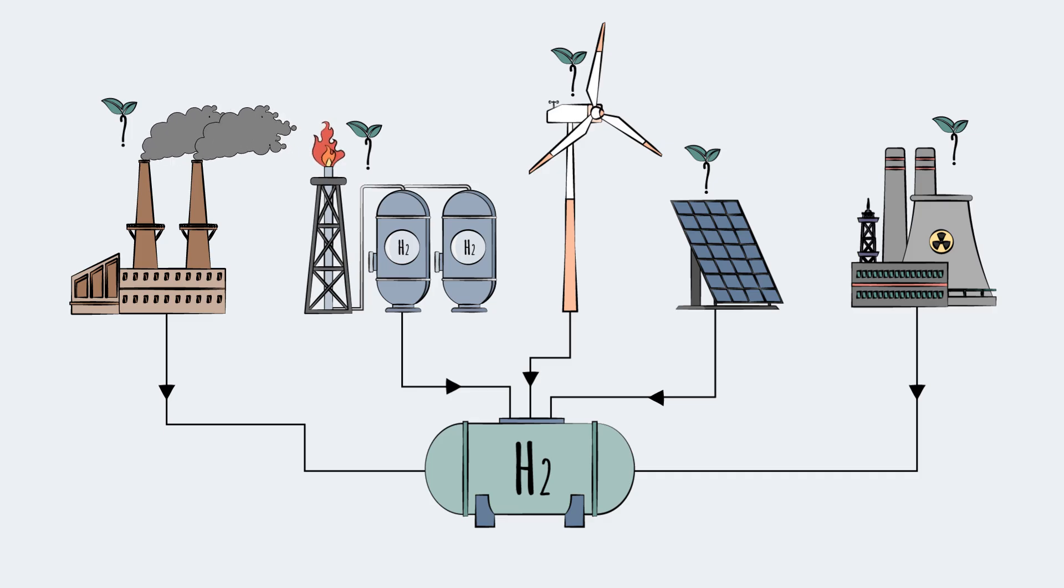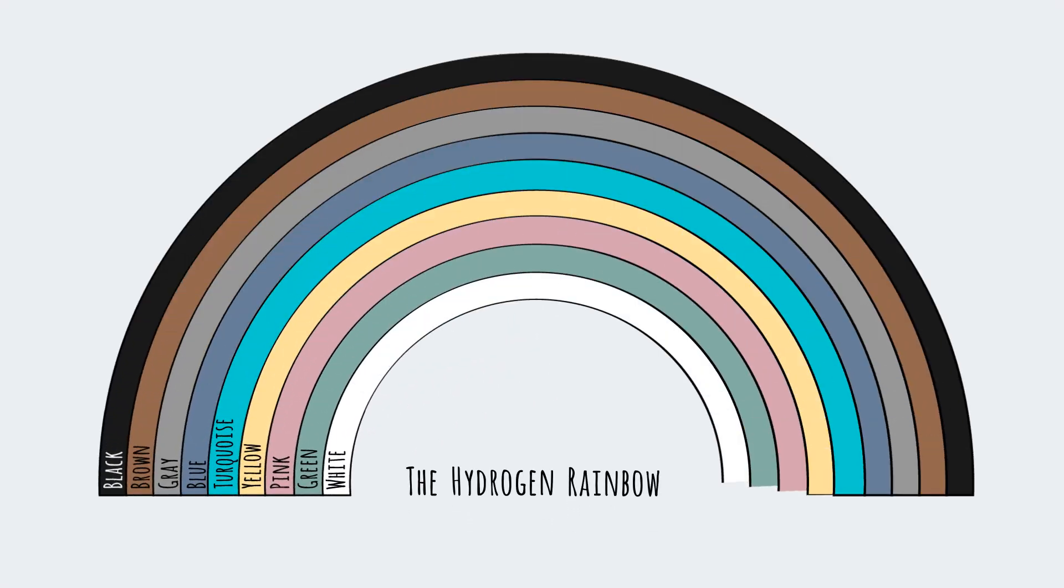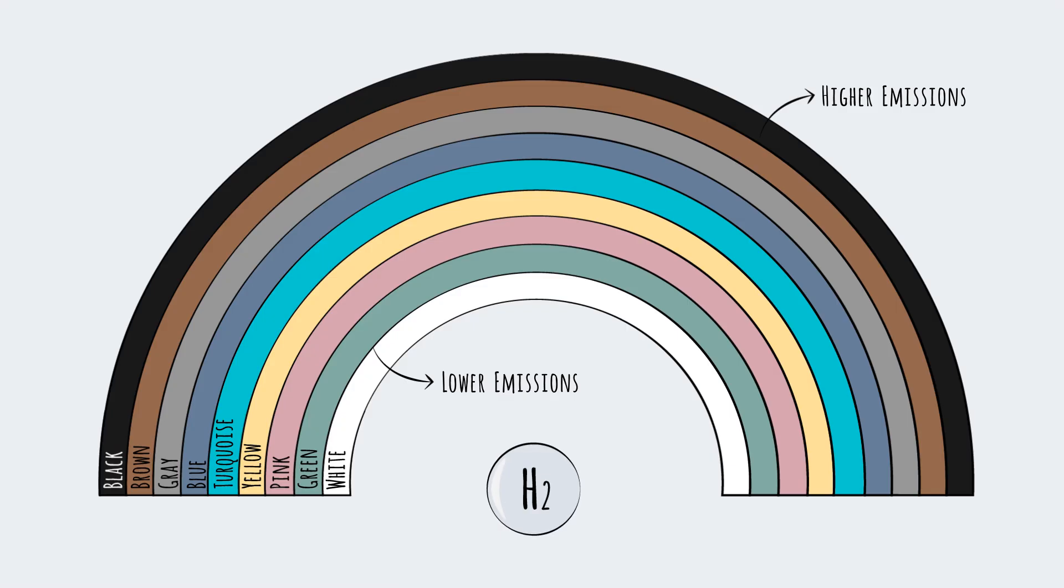Hydrogen is described by the method used to produce it, and each method is assigned a color. Today, hydrogen from the various production methods form what is called the hydrogen rainbow. Darker colors indicate hydrogen from higher emissions production methods. But don't be confused—the resulting molecule in all these cases is the same, and by the way, it's colorless.